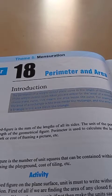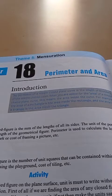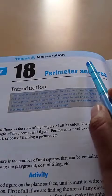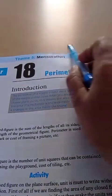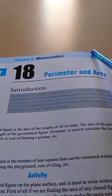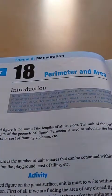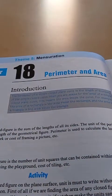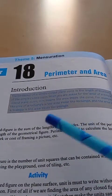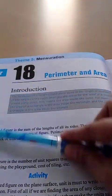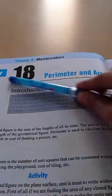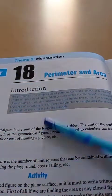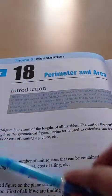You know that perimeter is the outer boundary of any figure. You can see this book — this outer boundary is related to perimeter. Outer boundary is perimeter, and area is the space occupied by the figure — that will be area.